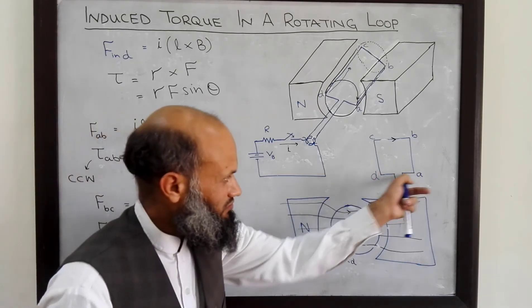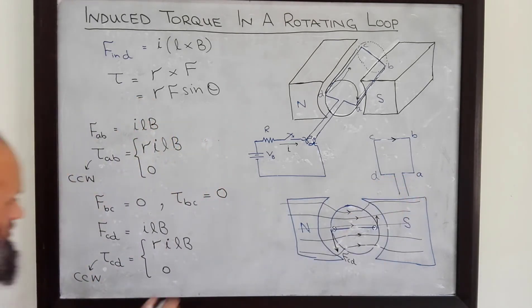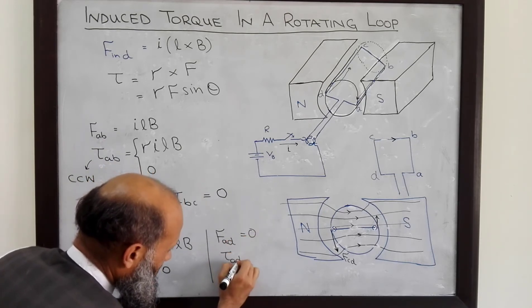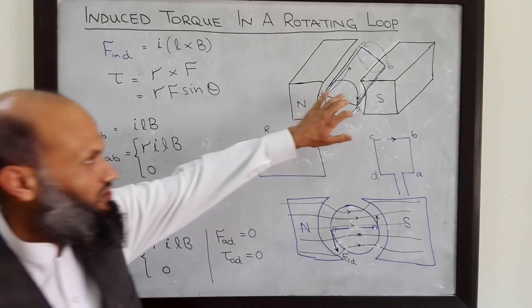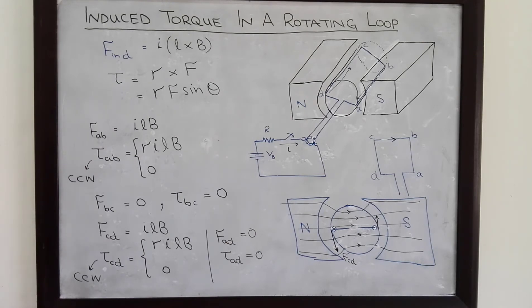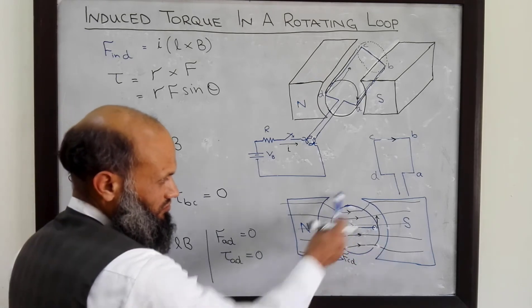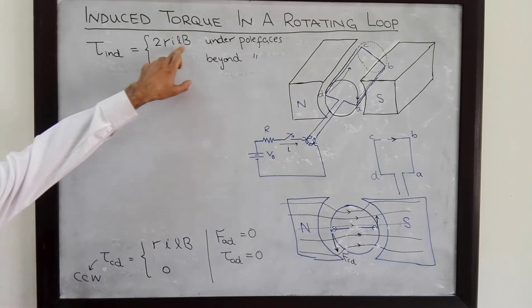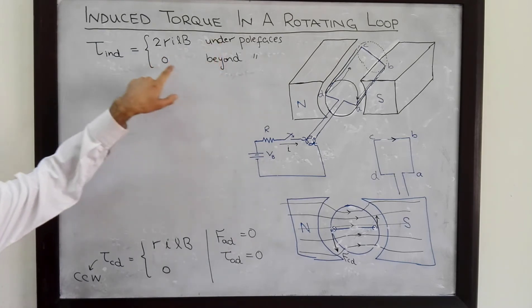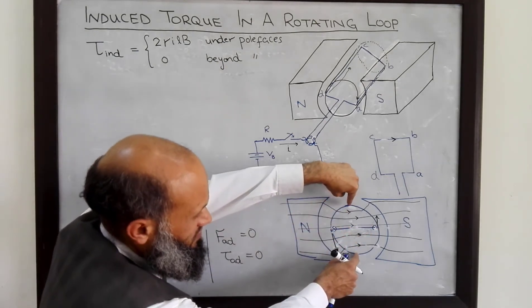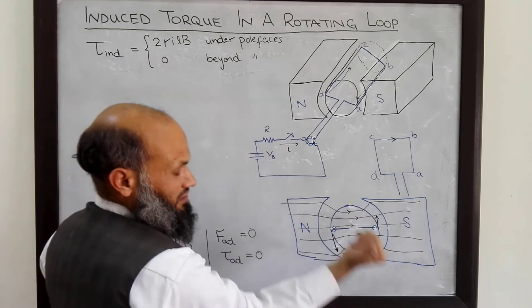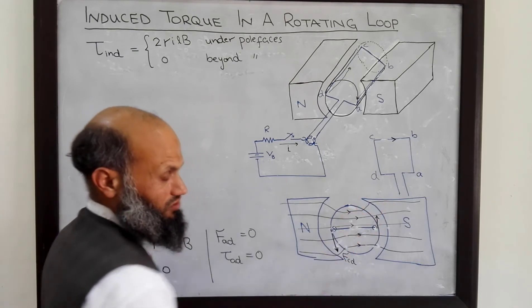For segment AD, similar to segment BC, we can conclude that the force due to segment AD equals zero, and hence the torque due to this segment is also equal to zero. The total torque induced by the coil is the sum of all the torques. Both τ_AB and τ_CD tend to rotate the rotor in the counterclockwise direction. Therefore, the total torque is 2RILB when conductors are under the pole faces, and zero when these conductors are beyond the pole faces. The direction of induced torque is out of the board, tending to rotate the rotor counterclockwise.